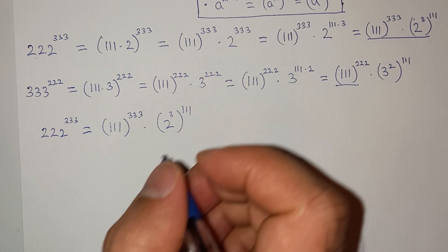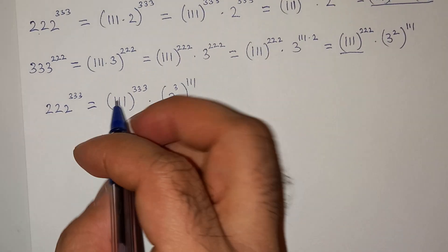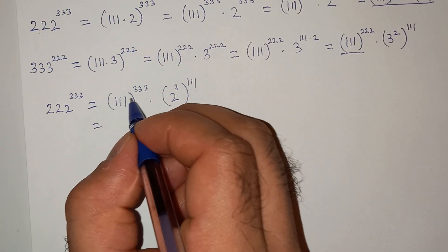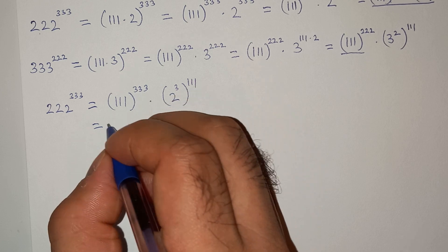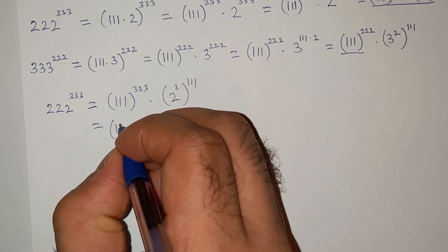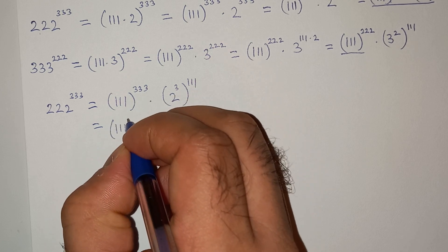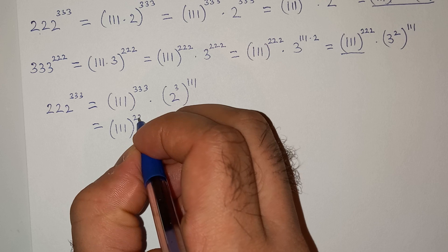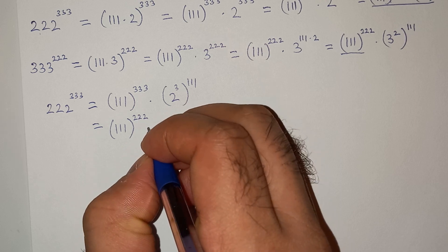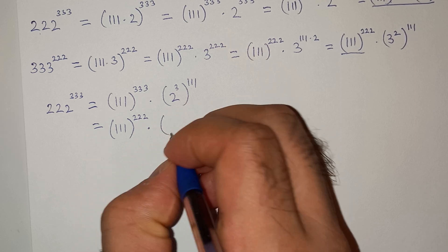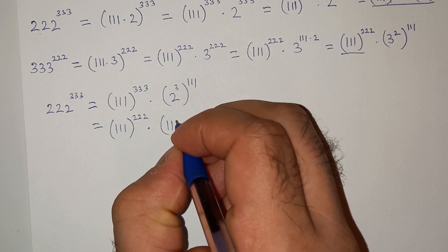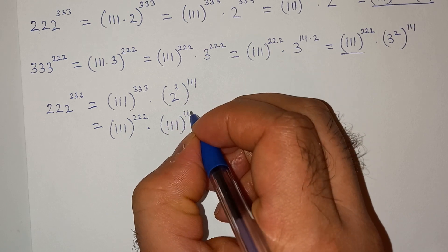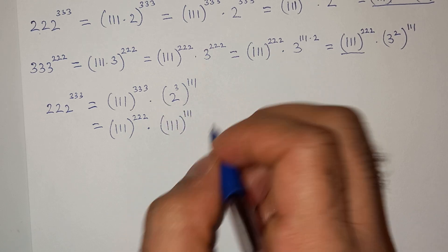So we can write this triple 1 power triple 3 as triple 1 power triple 2 multiplied triple 1 power triple 1.